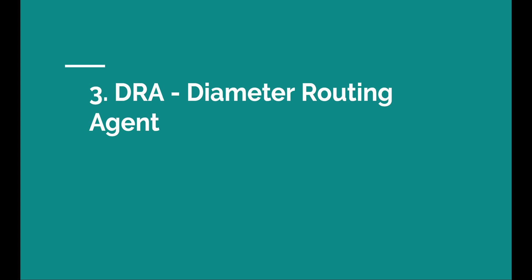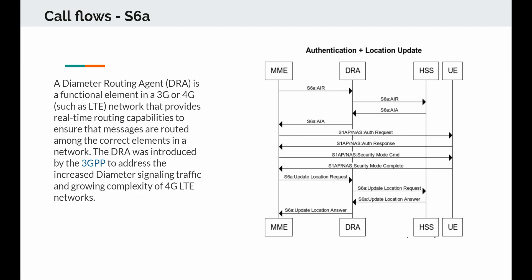Welcome back. In this section we will talk about the Diameter Routing Agent, which is an optional 3GPP network element, but we have been seeing a lot of telco operators actually deploying a DRA with the emergence of LTE roaming. A Diameter Routing Agent is a functional element in 3G or 4G LTE networks that provides real-time routing capabilities to ensure that messages are routed among the correct elements in a network. The DRA was introduced by 3GPP to address the increased diameter signaling traffic and the growing complexity of 4G networks.